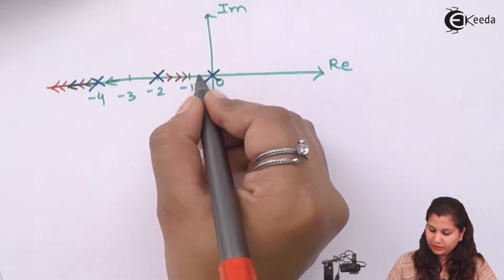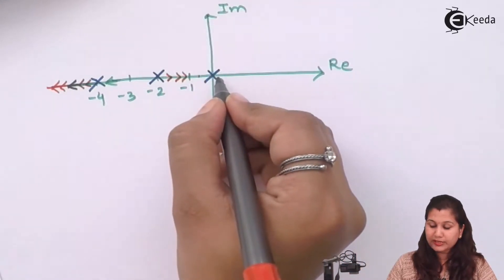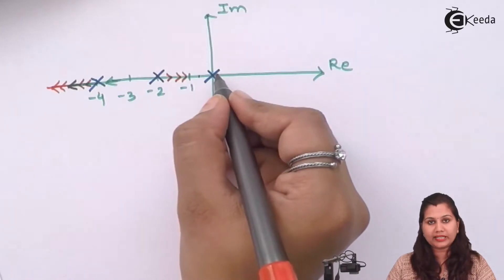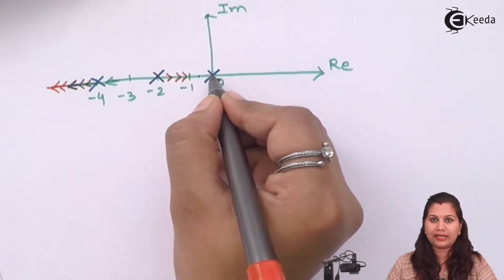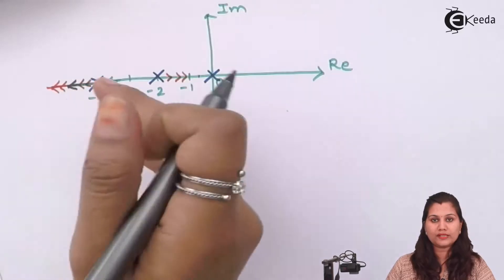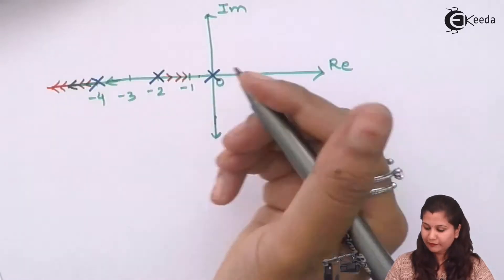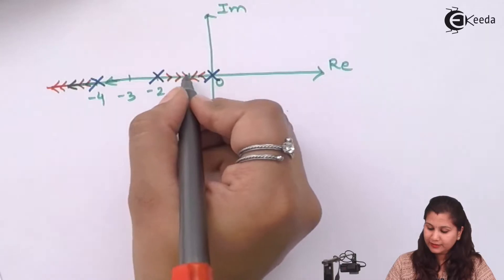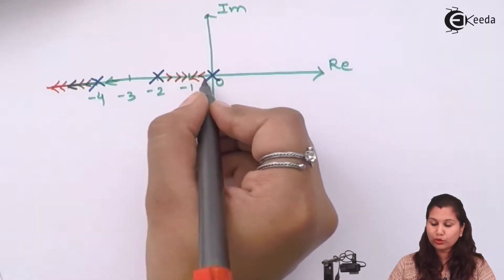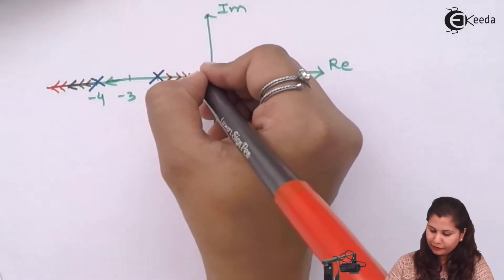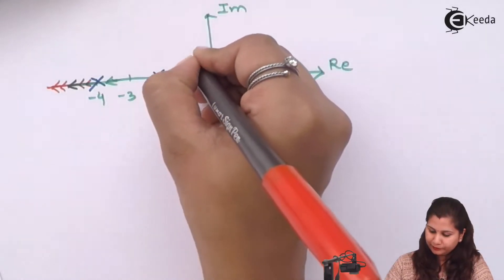If we take a point here for this pole, then the number of poles on the right hand side will be 1, which is an odd number, so the direction of root locus will be towards infinity. And because these two root locus branches are meeting at some point and then diverging, it will diverge like this.